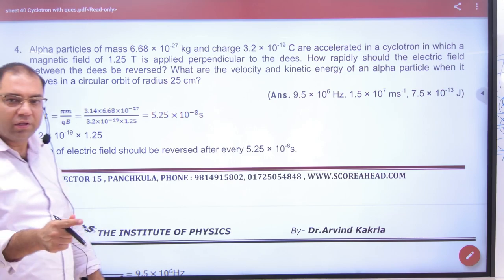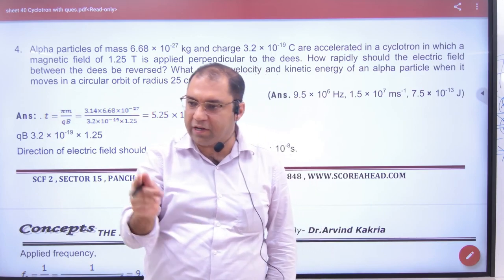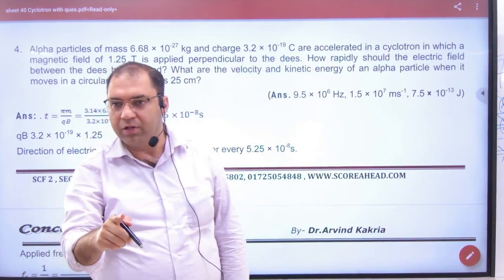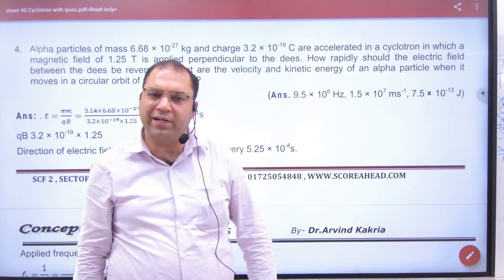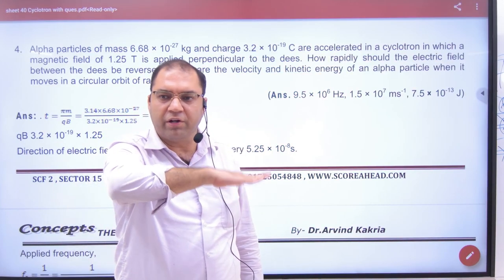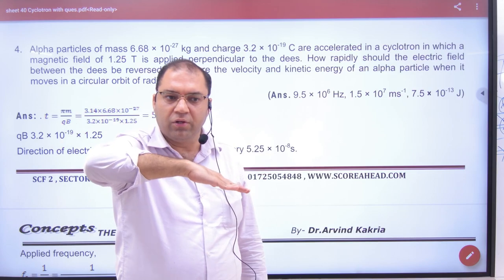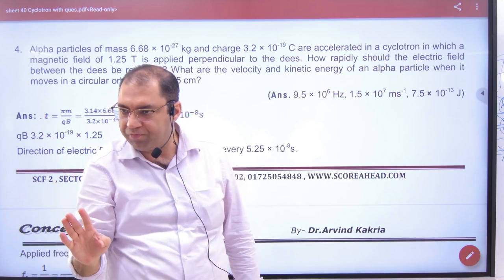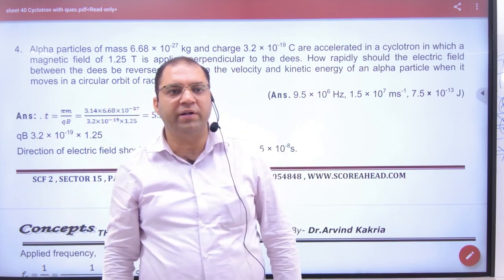What does the time period mean? The electric field is 1, reverse, then 1. So here, one D cover, the other D cover, that means 2πm by bq. He didn't ask the time period of oscillator. He asked how rapidly should the electric field between the Ds be reversed?